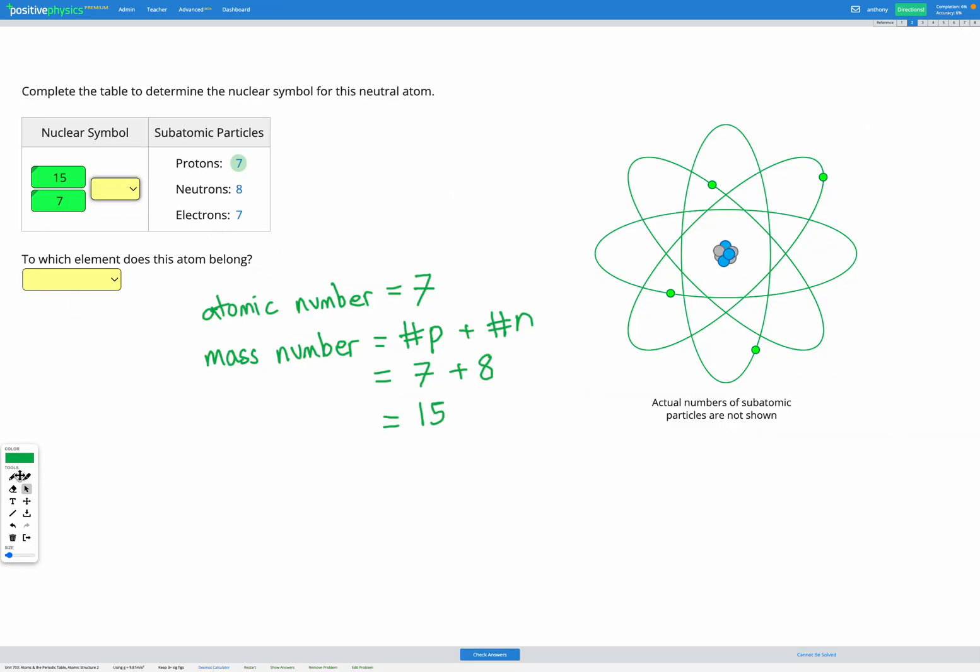So heading back here, our symbol should be for nitrogen, which is the capital N. To which element does this atom belong? It belongs to nitrogen.